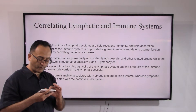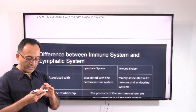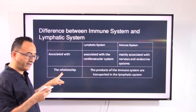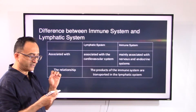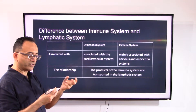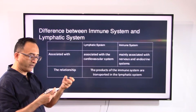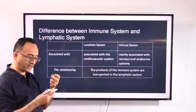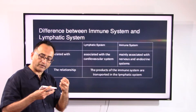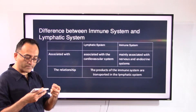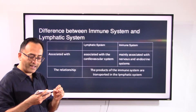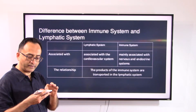These are the big differences, and this slide categorically shows where the difference lies — which system works with which. The lymphatic system works with the cardiovascular system, and the immune system is mainly associated with the nervous and endocrine systems. The relationship between them is that the products of the immune system are transported within the lymphatic system.